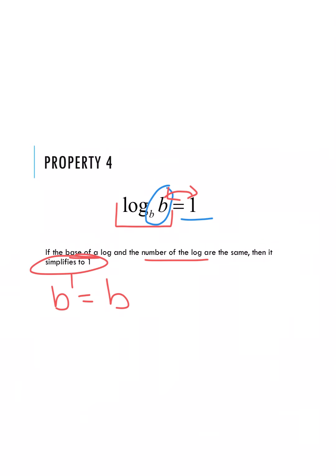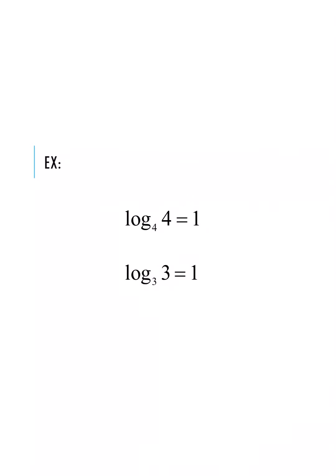Let's verify the property holds. I have log base 4 of 4 — those are the exact same values, so it simplifies to 1. For the second example, log base 3 of 3: since they are both the same value, it also simplifies to 1.